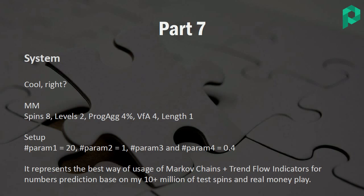Be careful: if you're using this algorithm and you change parameter 1 from 20 spins to 8, you should not forget to also change parameters 3 and 4. So 0.4 won't probably be the best setup in that case — it will be something like 0.65.